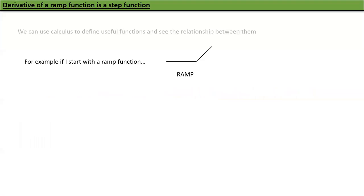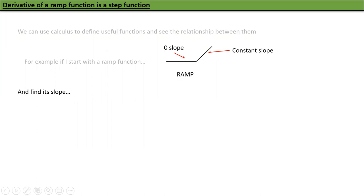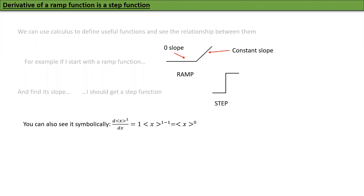The derivative of a ramp function is a step function, so we can use calculus to define useful functions and see relationships between them. If I start with the ramp function, I can differentiate it — in one region it's zero, in the other it has constant slope, so its derivative looks like a step function. Symbolically: d/dx of ⟨x⟩^1 equals one times ⟨x⟩^(1−1) = ⟨x⟩^0, which is a step function. So our calculus converts a ramp into a step.